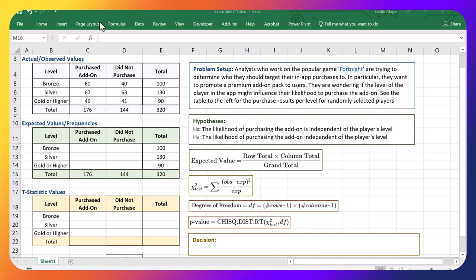We want to tell if there's some sort of dependence between groups. Here's the setup: Analysts who work on a popular game called Fortnite are trying to determine who they should target their in-app purchases to. In particular, they want to promote a premium add-on pack for users. They're wondering if the level that the player is at in the app might influence their likelihood of purchasing an add-on pack.